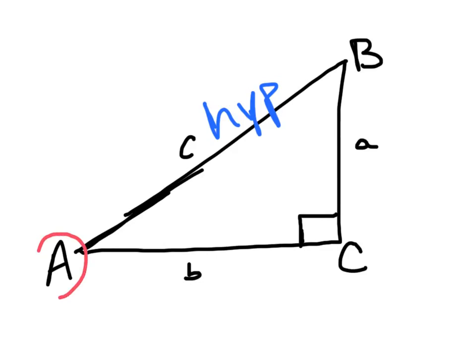Looking at angle A, our adjacent side is going to be B. Adjacent means touching or next to. So, line B is touching angle A, and then our opposite side is going to be line A, because line A is across from angle A.